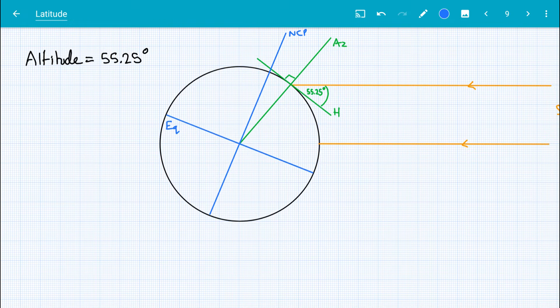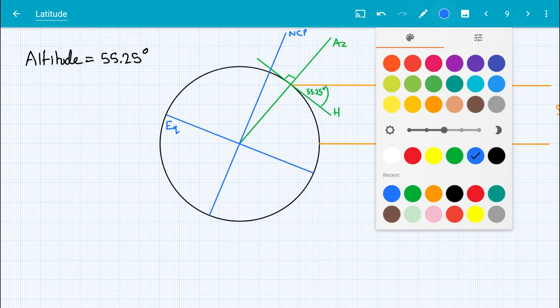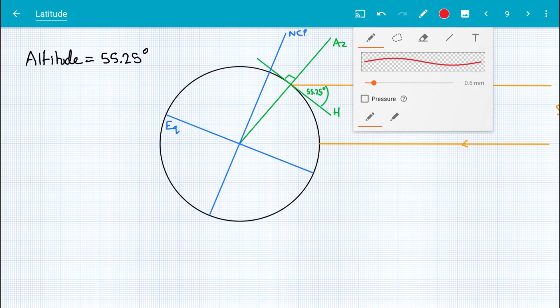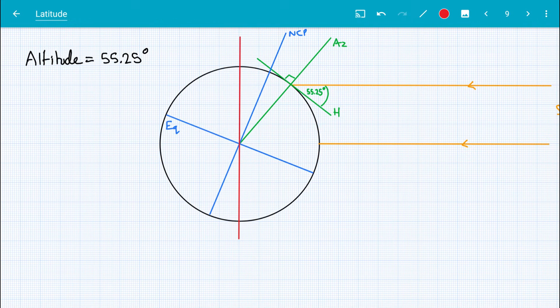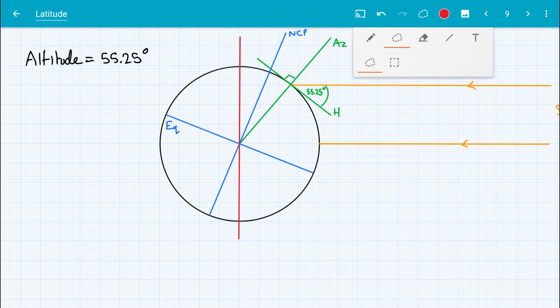And we know that the north celestial pole is 90 degrees to another line, which is perpendicular to, not 90 degrees, 23.5 degrees to another line here, which is 90 degrees to the rays that the sun is making.